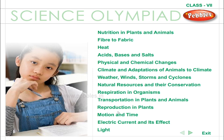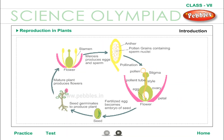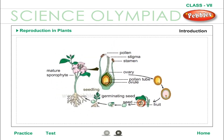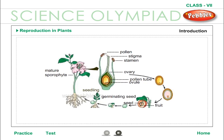Science Olympiad Class 7: Reproduction in Plants. Multiplication or reproduction may be defined as the ability of living organisms to produce new living beings similar to themselves. There are a number of methods of reproduction, but each of them can be classified either as asexual mode or as a sexual mode of reproduction.